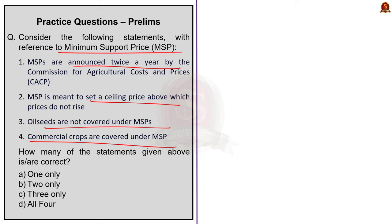Consider the following statements about MSP: MSPs are announced twice a year by the Commission for Agricultural Costs and Prices; MSP is meant to set a ceiling price above which prices do not rise; oil seeds are not covered under MSP; commercial crops are covered under MSP. How many statements are correct? The correct answer is option A: 1 only — statement 4. Statement 1 is incorrect because MSPs are announced by the government, not CACP. Statement 2 is incorrect because MSP sets a floor price, not a ceiling price. Statement 3 is incorrect because oil seeds are covered under MSP. Statement 4 is correct — commercial crops are covered under MSP.